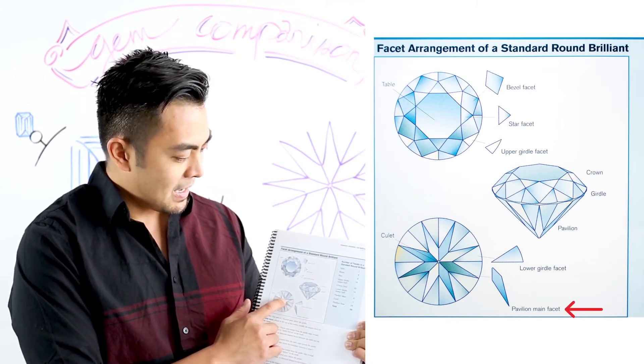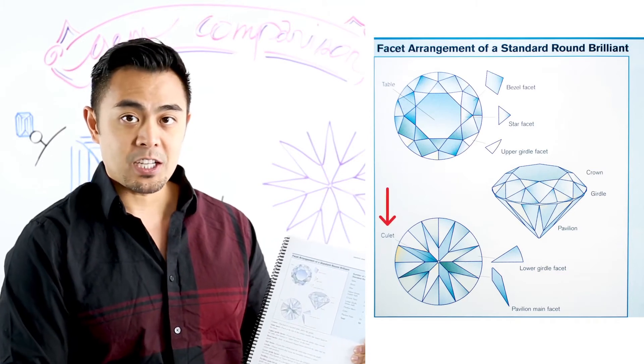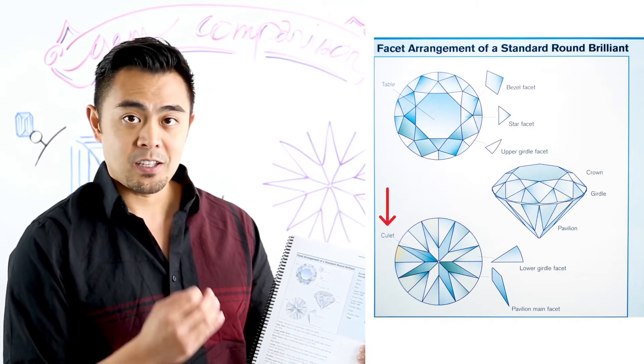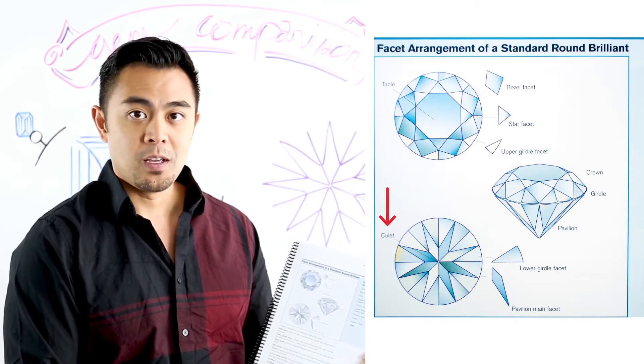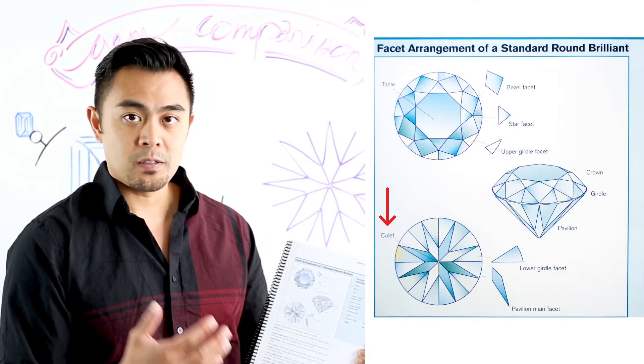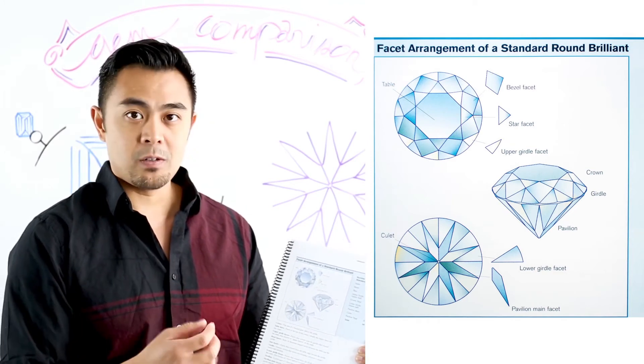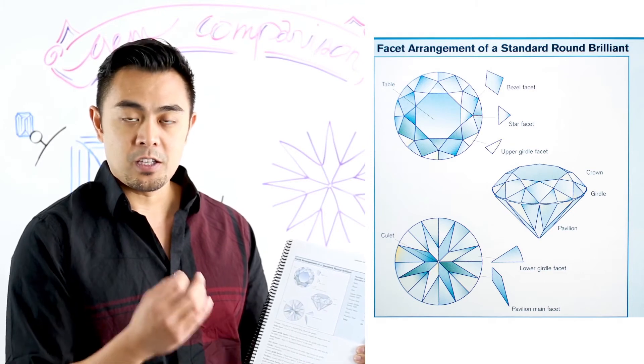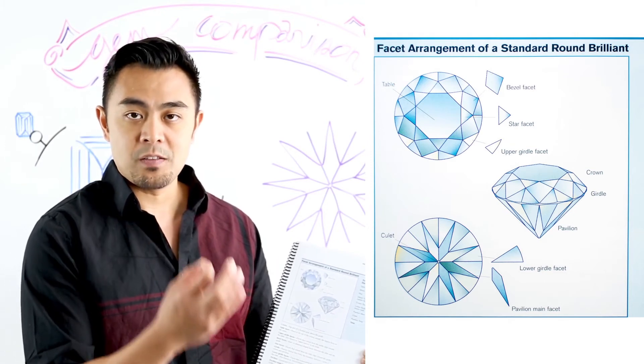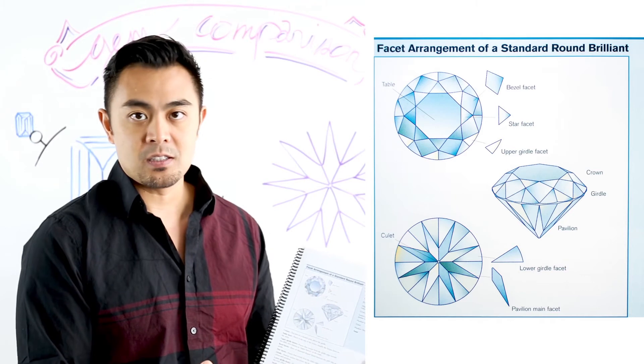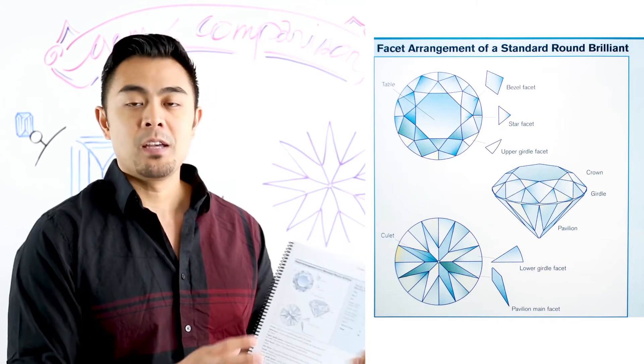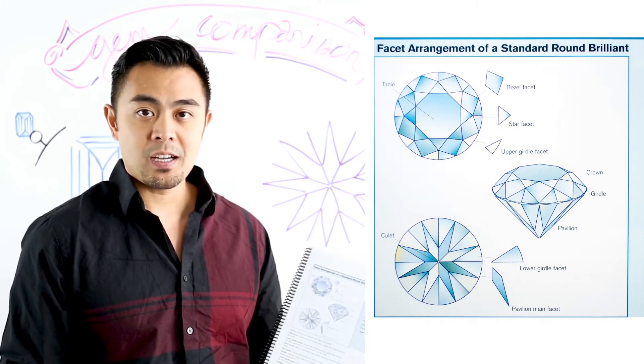And if the culet is actually faceted then the culet also has a facet too. Many times in today's world they'll fasten in a way where the culet would not be faceted and the culet will come to a fine point, and if it comes to a fine point without a facet then the facet does not count.